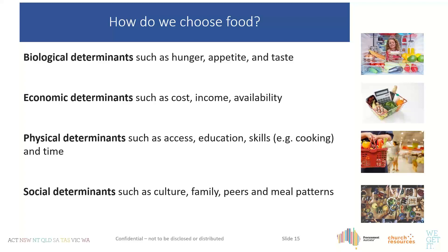How do we choose? Biological determinants include hunger, appetite, and taste. Economic determinants include cost, income, availability, and cooking skills. Social determinants include culture, family, peers, and meal patterns. When residents move into aged care homes, some of these factors diminish — meal patterns change, and access to fridges and home food practices is reduced.